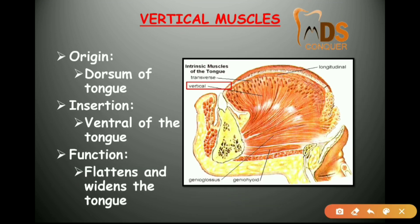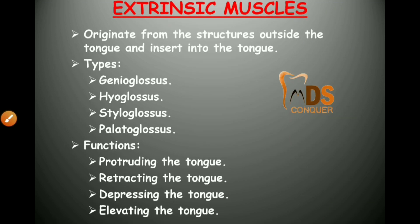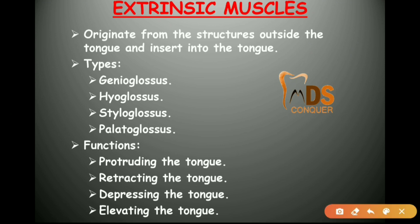The vertical muscle originates from the dorsum of the tongue and inserts into the ventral part. Its function is to flatten and widen the tongue. Those are the intrinsic muscles.